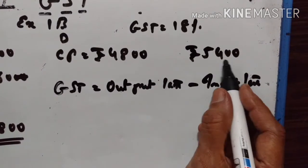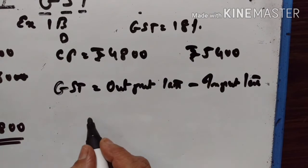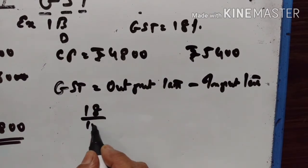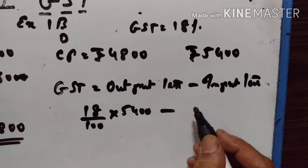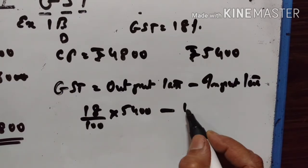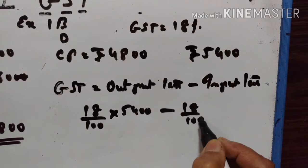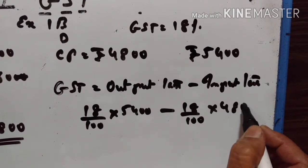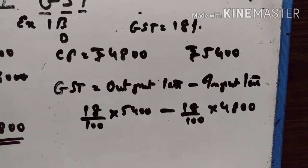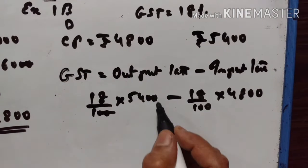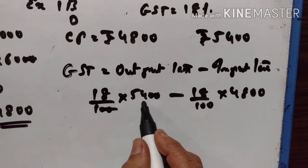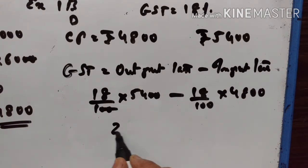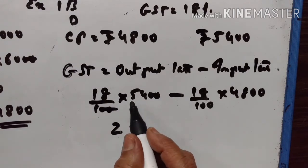GST paid by the dealer is equal to output tax minus input tax. Output tax is 18% of Rs.5400 and input tax is 18% of Rs.4800. 18 into 48 is equal to 72 (×10) and 18 into 54 is equal to 90 (×10).